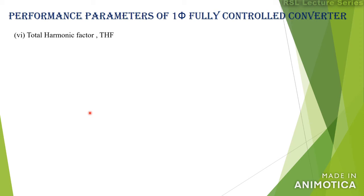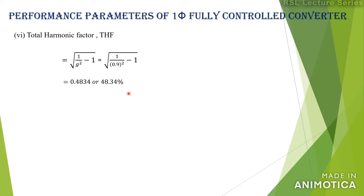The total harmonic factor is given by √(1/g² − 1) = √(1/0.9² − 1) = 0.4834, or 48.34%. The input power factor is given by g × displacement factor = 0.9 × cos α, so the input power factor equals 0.9 cos α.